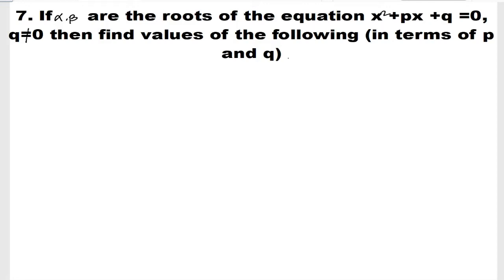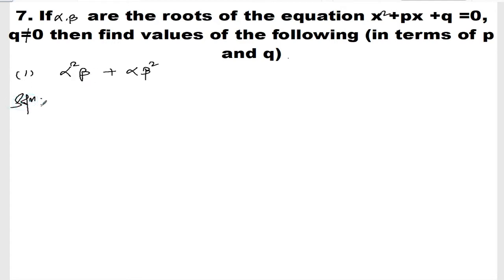We are doing exercise 5.1, question number 7, roman number 1. The question says: if alpha and beta are the roots of the equation x² + px + q = 0, where q ≠ 0, then find the values of the following in terms of p and q.